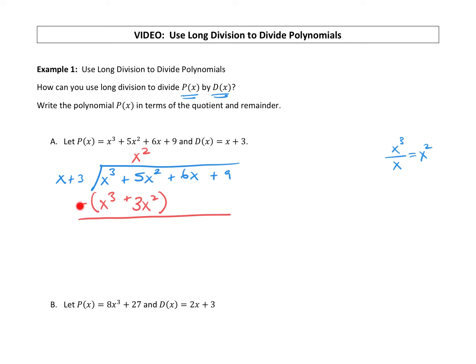We're subtracting the second terms: 5x² minus 3x². Be careful — if you subtract a negative it turns positive — but 5x² minus 3x² is just 2x². After that subtraction, carry down the rest of the original polynomial: plus 6x plus 9. Then we start the whole process again.